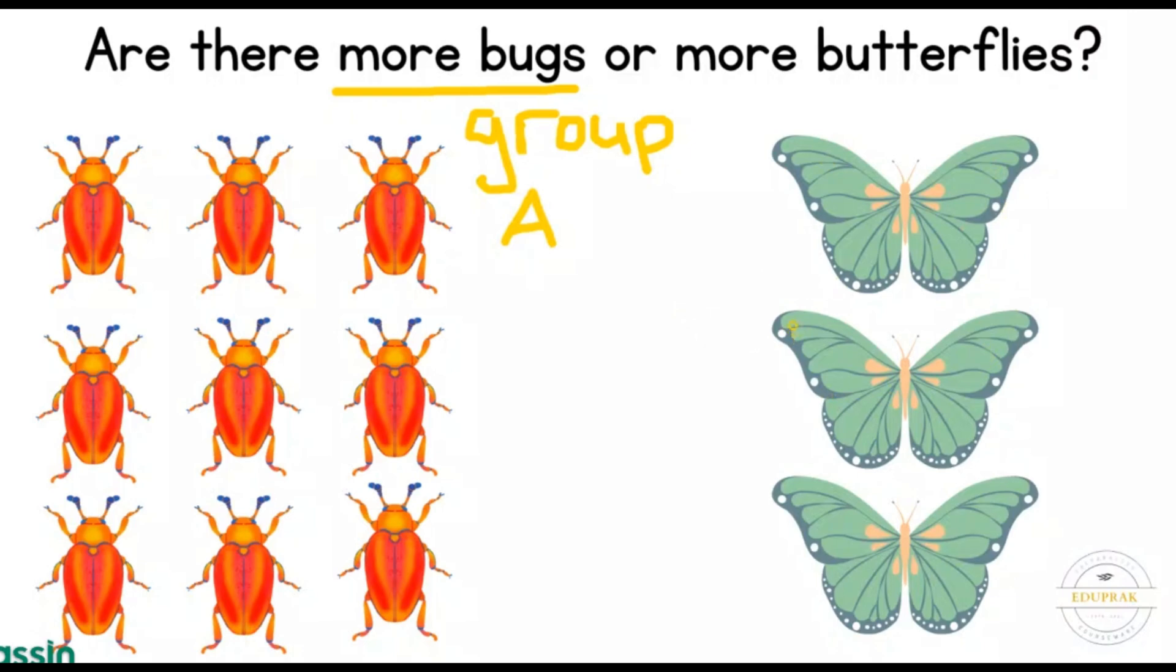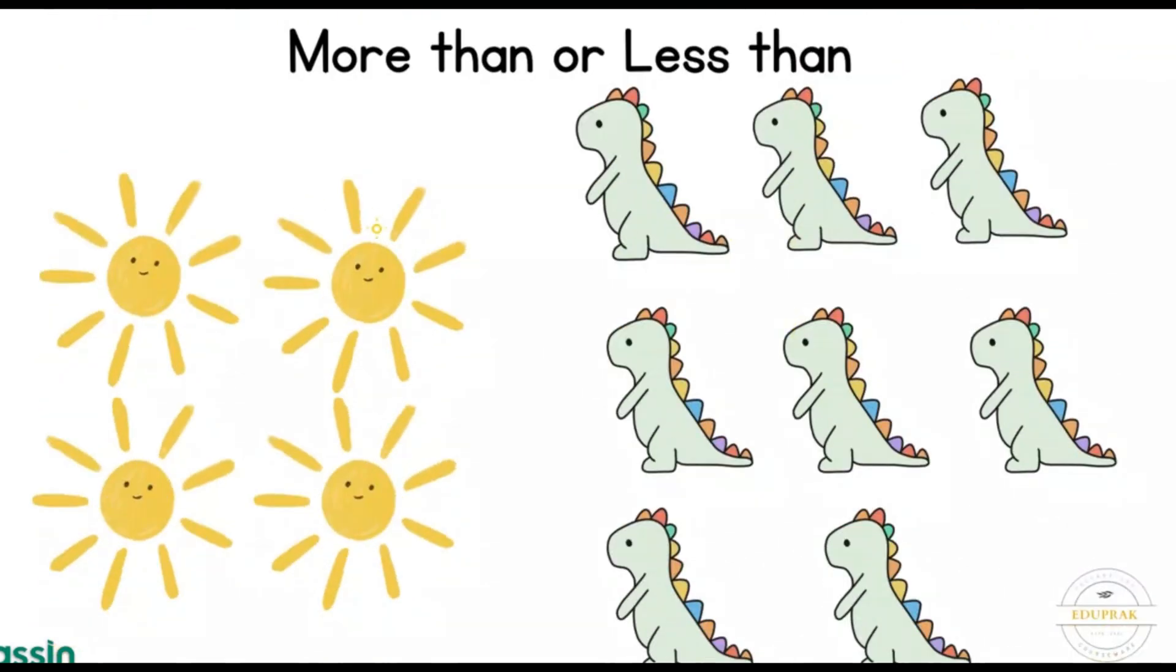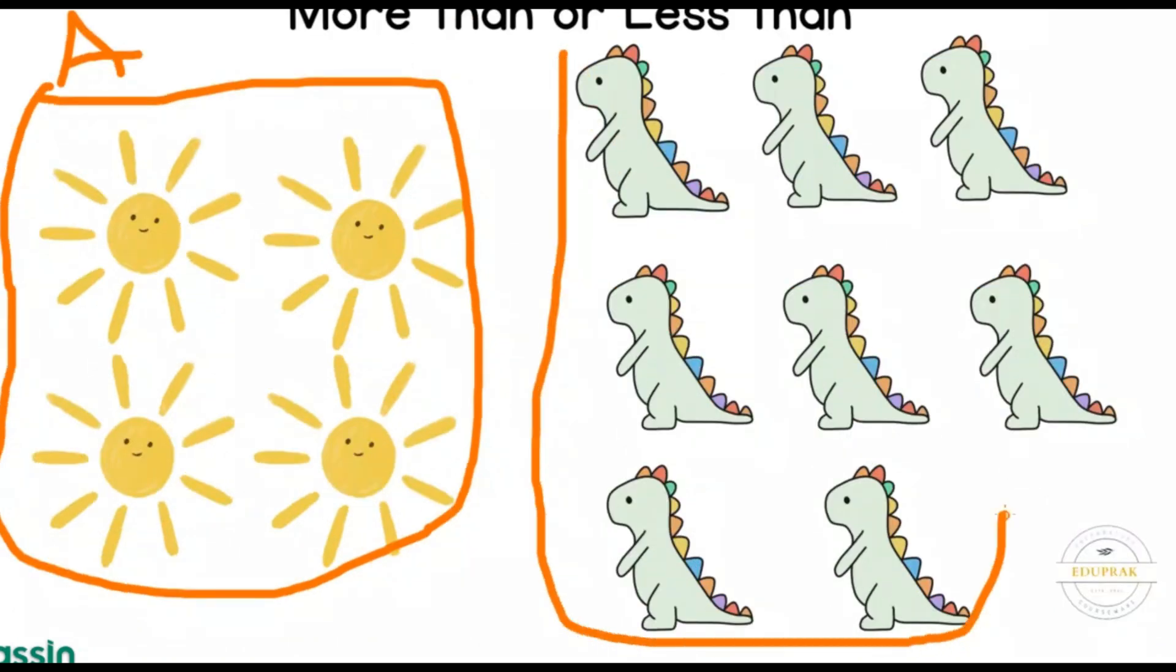Let's look at another example. More than or less than. We will call this Group A, and we will call this Group B. So in Group A we have four suns, and in Group B we have seven dinosaurs.